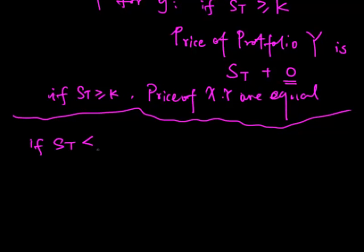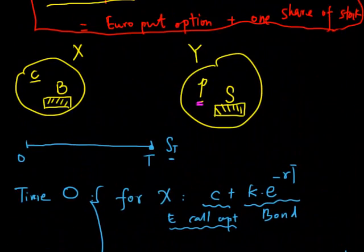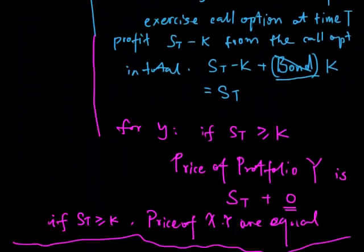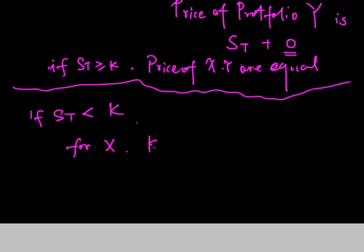Now consider another scenario: if ST is less than K. For Portfolio X, if ST is less than K, the call option will be out of the money, so the call option value is zero. But we still have the bond, and when the bond matures we get K. The value of Portfolio X at time T is K.